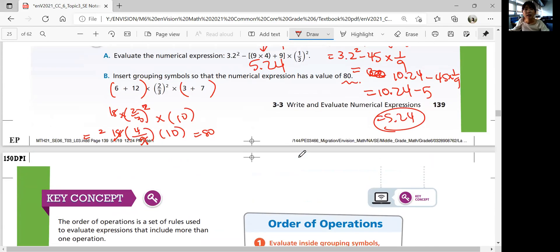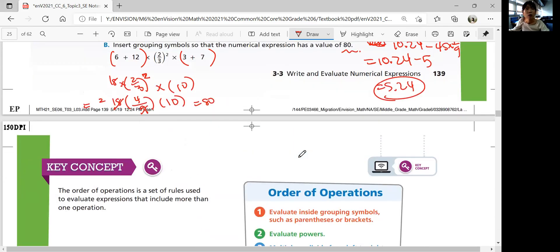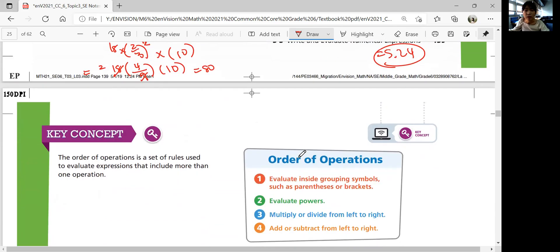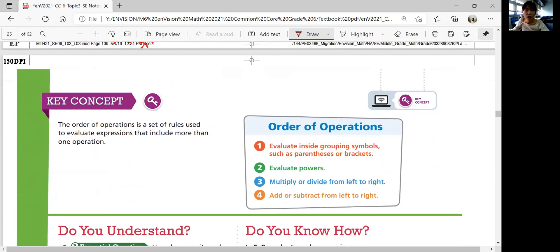So let's summarize our lesson. We wrote and evaluated numerical expressions in this lesson. The order of operations is a set of rules used to evaluate expressions that include more than one operation. Remember that the order of operation is first to evaluate inside grouping symbols such as parentheses or brackets from inside out. And two, you're evaluating powers.